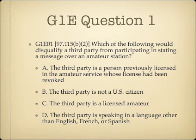Question 1. Which of the following would disqualify a third party from participating in stating a message over an amateur station? A, the third party is a person previously licensed in the amateur service whose license had been revoked; B, the third party is not a U.S. citizen; C, the third party is a licensed amateur; or D, the third party is speaking in a language other than English, French or Spanish.